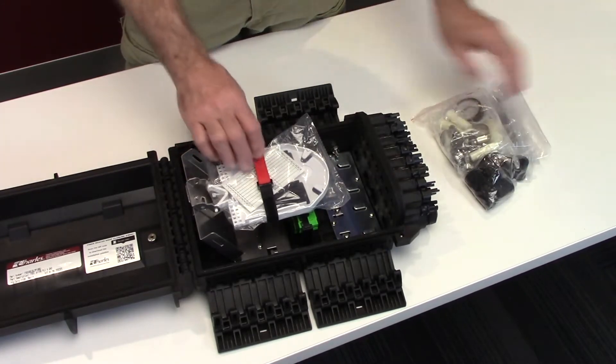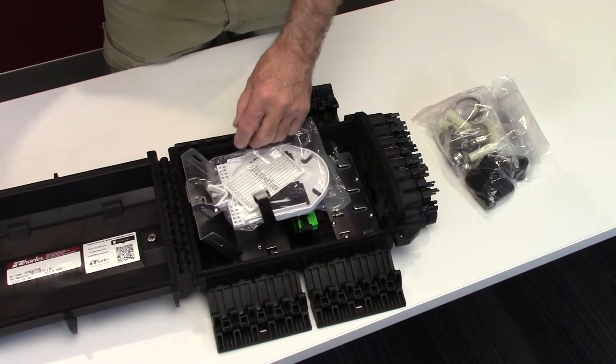Undo the tray strap and pry the tray hinge to remove it from the hinge fixture.